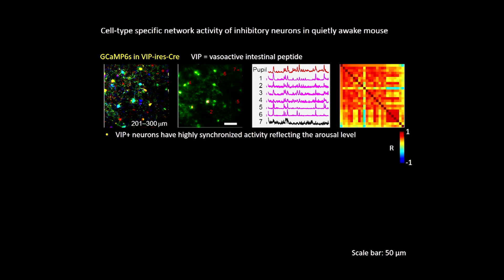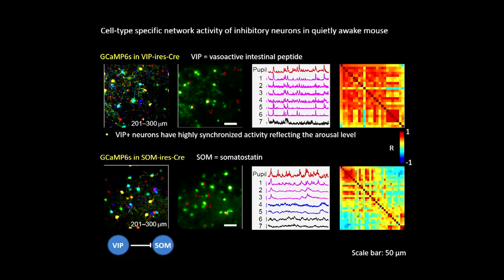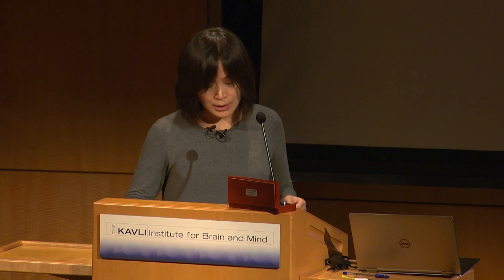The next cell type of interest is somatostatin neurons. The current dominant model is that VIP neurons inhibit somatostatin neurons, so if the model is correct, somatostatin activity should always be anti-correlated with the pupil. But that is not what we see. We do see anti-correlated populations, but we also see populations that are correlated. This suggests the picture is too simplistic, and somatostatin neurons actually have heterogeneous activity that was not appreciated before. We did not set out to make this discovery — it naturally fell out of the data due to our high-throughput imaging.